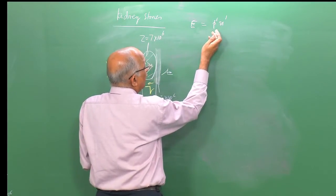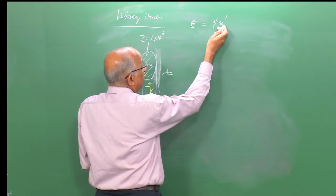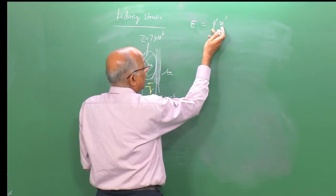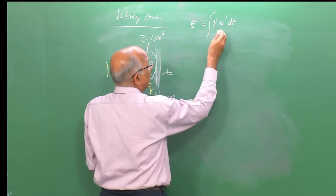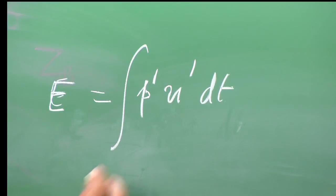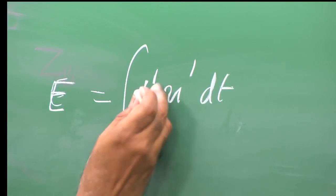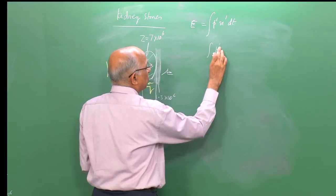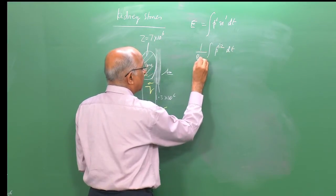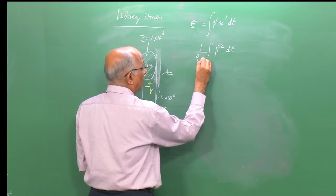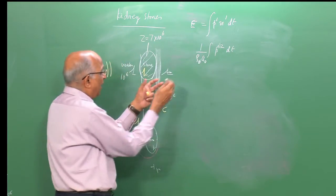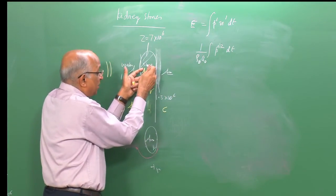Regarding energy: the energy associated with a wave is proportional to p prime times u prime — a power density. Integrating over time gives the energy, which can be written as p prime squared divided by the impedance (ρ₀a₀). This energy is what is dissipated and used for crushing the stone.